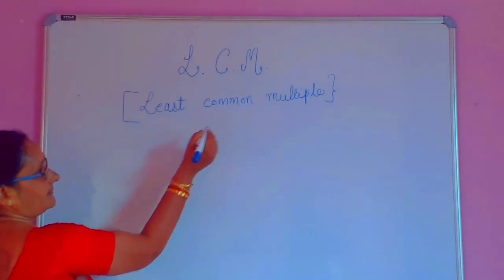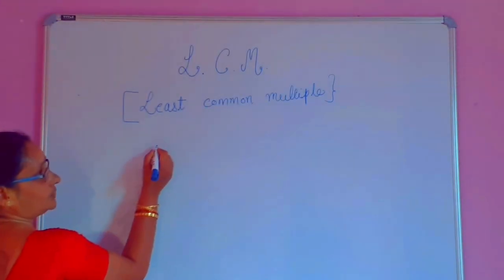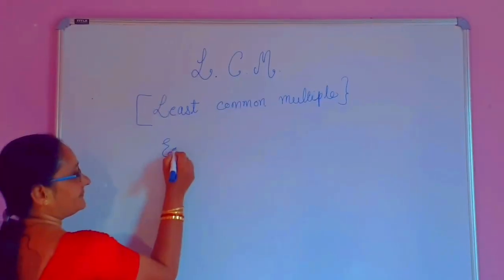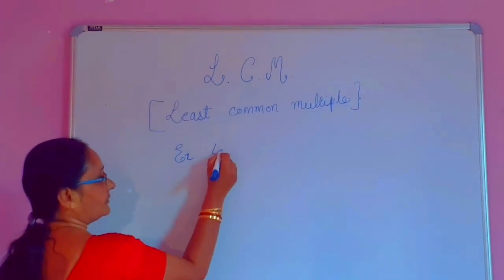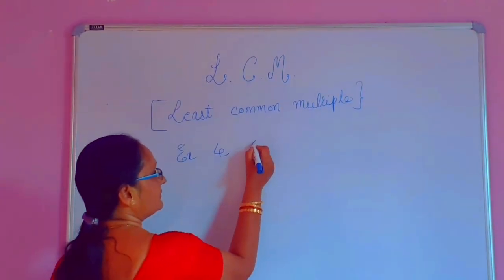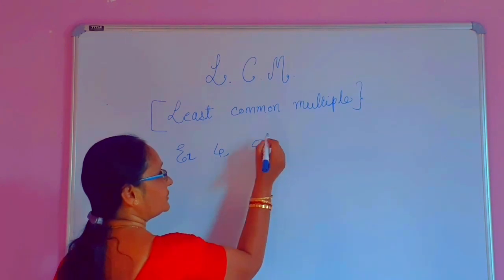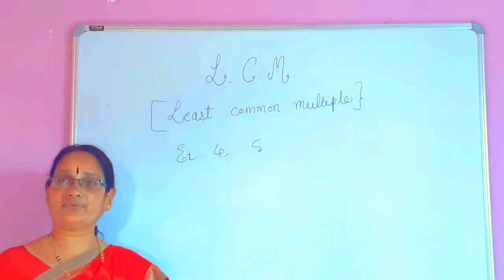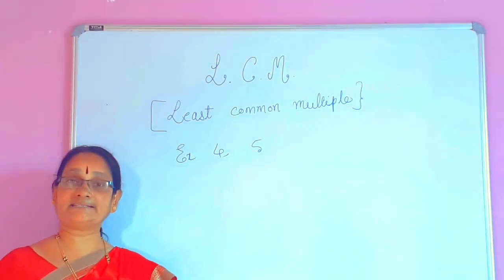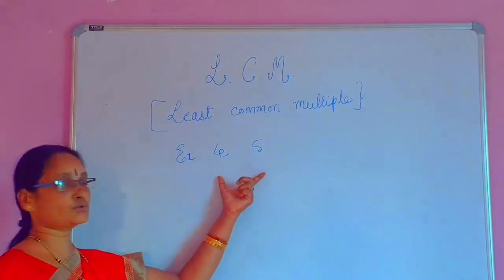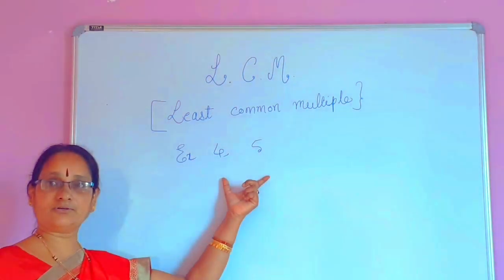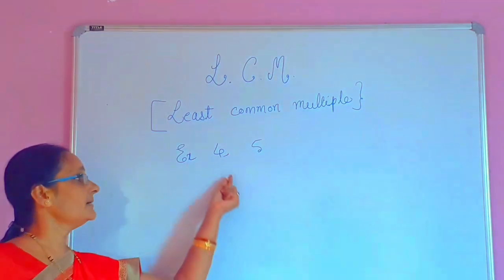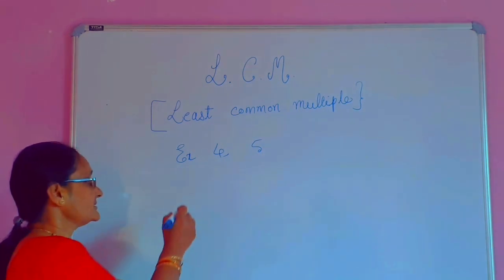Least Common Multiple of two numbers. For example, 4 and 5 are two numbers. Now let us find out the LCM of these two numbers. Firstly, how to write the multiples of 4.